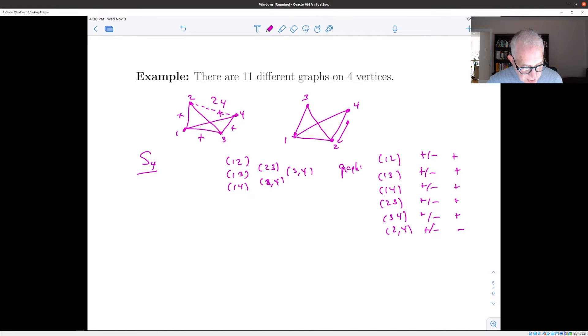And the group S4 acts on the edges by permuting the ends. So for instance, suppose we take the cycle just for the sake of discussion, 1234 as an element of S4. So what is 1234 do to the edge 12? Well, it takes one to two, and it takes two to three. So it takes the edge 12 to the edge 23. And where does it take just for the sake of discussion 14? 1234? Well, it takes it to 21. So that's the action of the group on the edges.